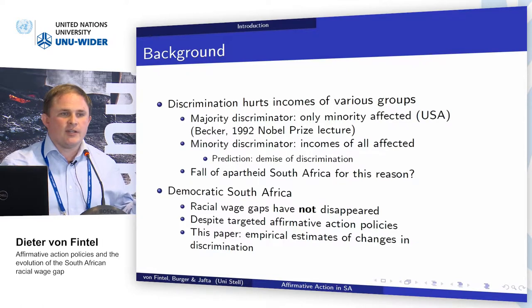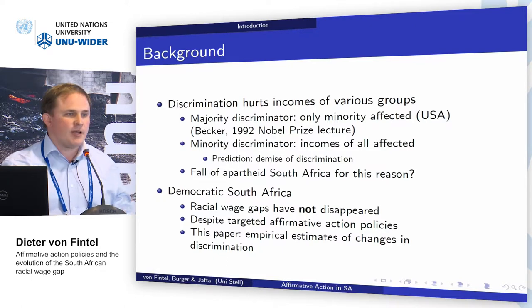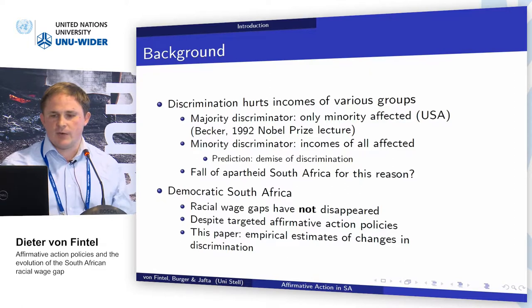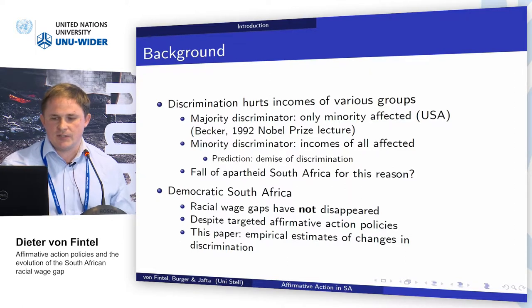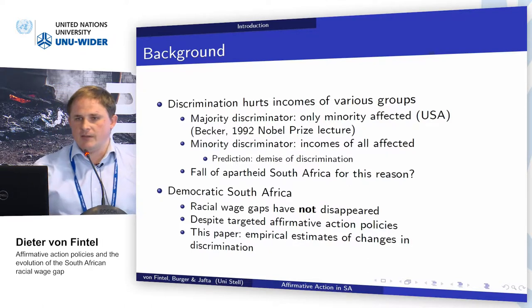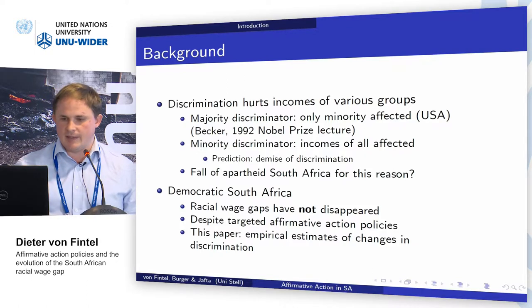By conjecture, once apartheid was formally dismantled and job reservation was removed, all the differences should have imploded and we should have seen a new trajectory of equality. But this is really not the case. We haven't seen racial wage gaps disappear, despite these targeted policies which, as I'm going to outline, have been very targeted but not necessarily had the expected effect.